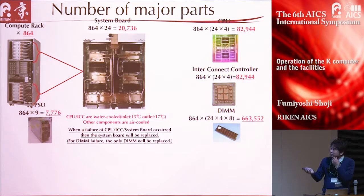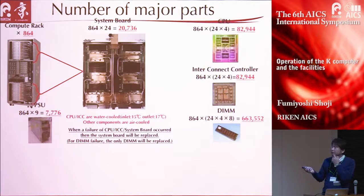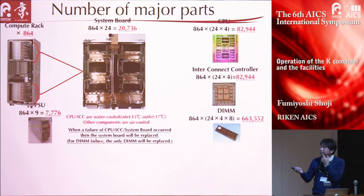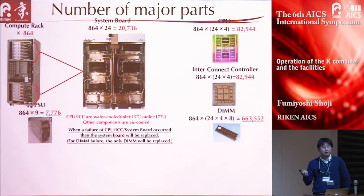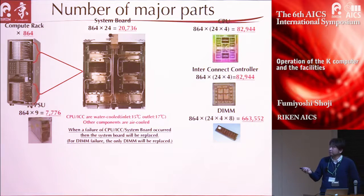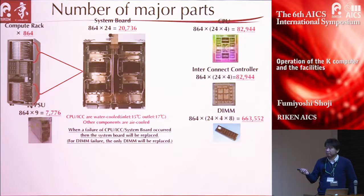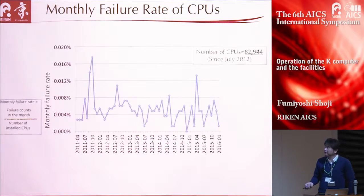When a failure of CPU, ICC, or system board occurs, the system board will be replaced as the operational unit. But for DIMM failure, only the DIMM will be replaced.